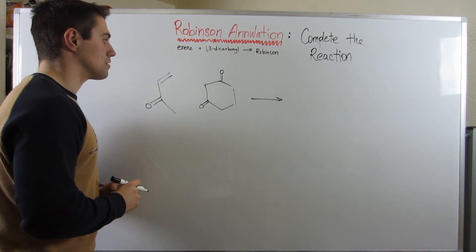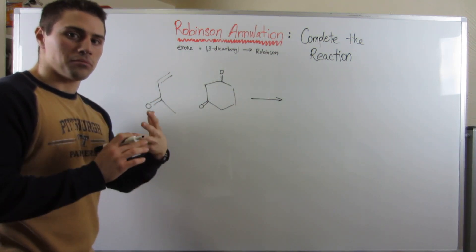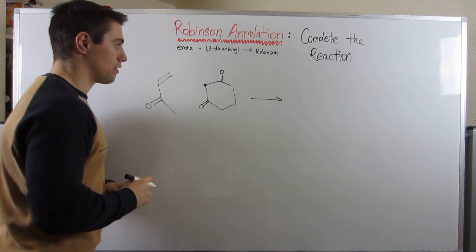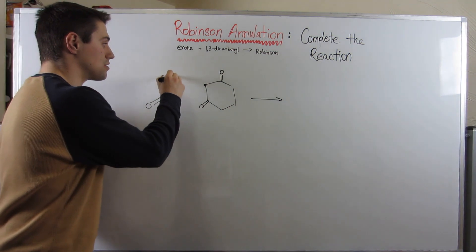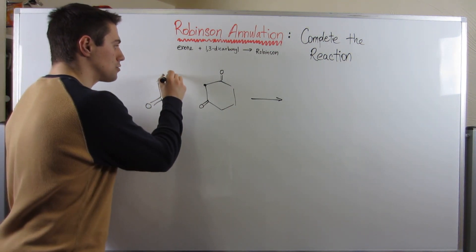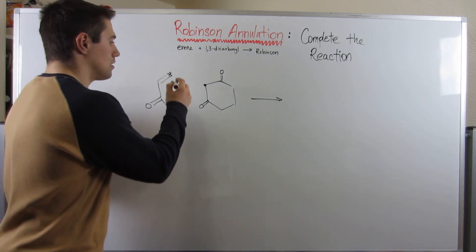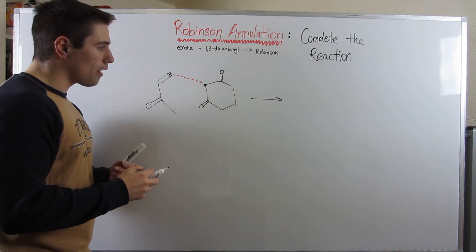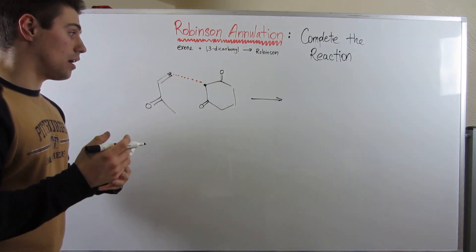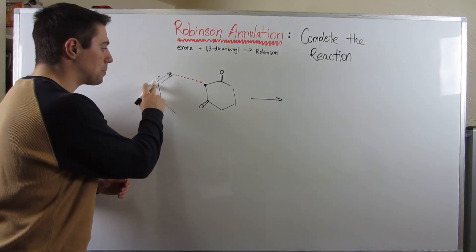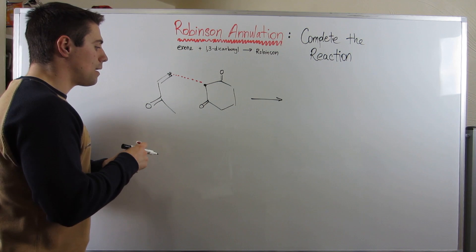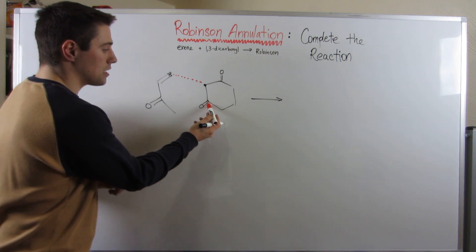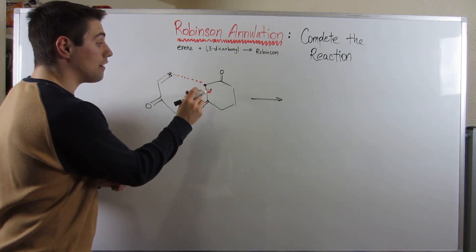I'm going to not write the reagents. Remember, this is the alpha carbon we make our enolate with, and in the first step we attack this carbon right here in a Michael addition. I draw a dotted line right there — I'm going to make a connection right here. After the Michael addition is all said and done, we make our enolate the opposite way, because we attack with this alpha carbon to this carbonyl, because this can form a 1,2,3,4,5,6-membered ring.